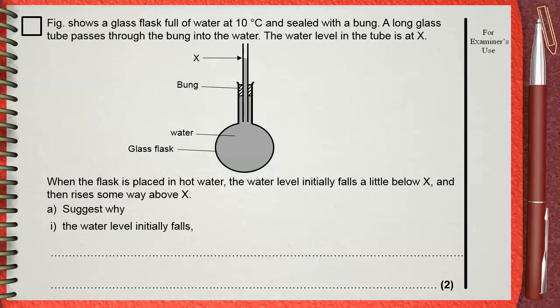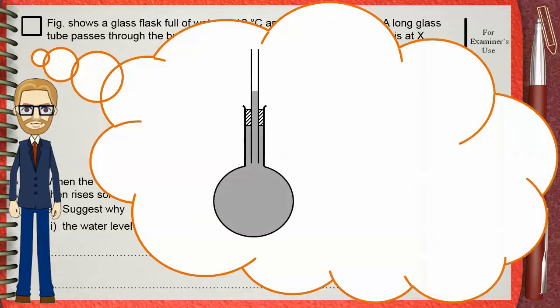Okay, let's imagine here what happened. This is our flask and this is the level of water in the thin tube. If the flask is heated by any means, you can heat it by a flame. The question says that the flask is heated by putting the whole flask in hot water. Okay, there is no problem.